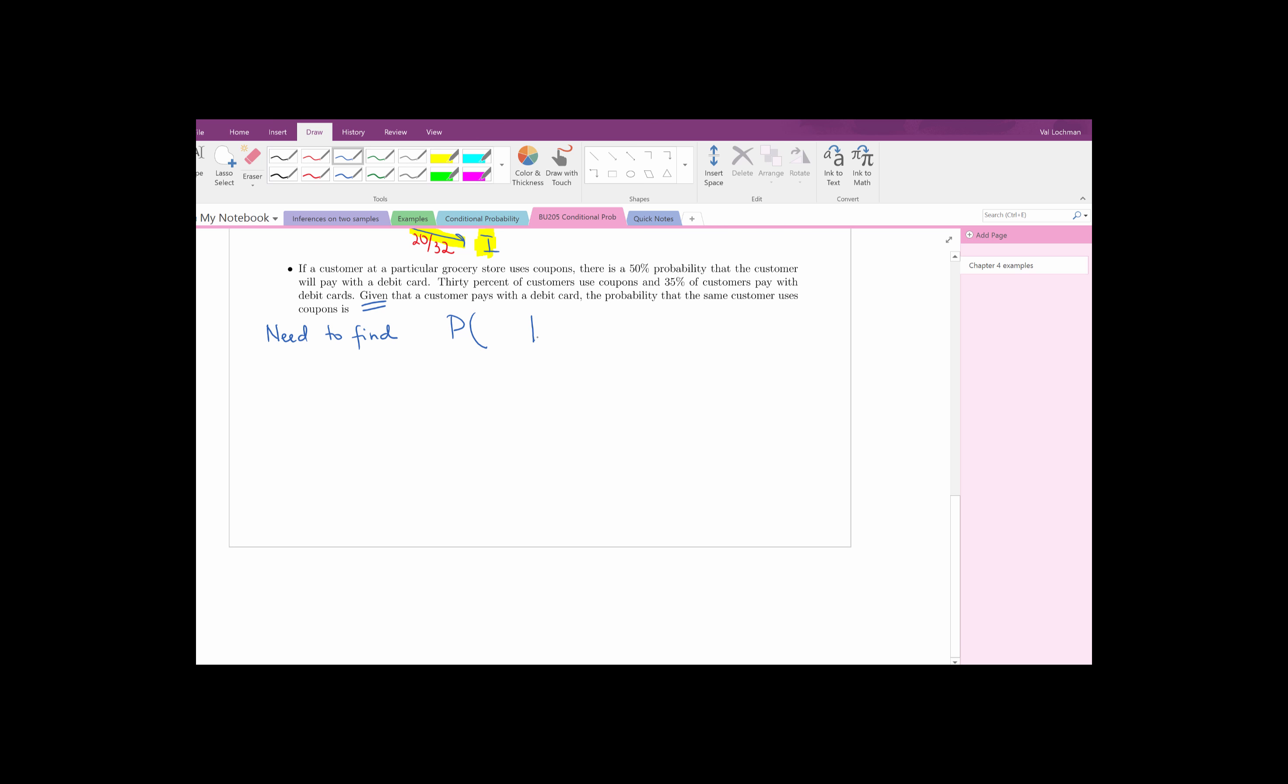So what do we need to find? The probability of what given what? Given that a customer pays with a debit card, what is the probability that this customer uses coupons? That's what we need to find. Now we just need to use our formula. Probability that the customer uses coupons given that he or she used a debit card is probability that the customer used a coupon AND debit card divided by the probability of using a debit card.